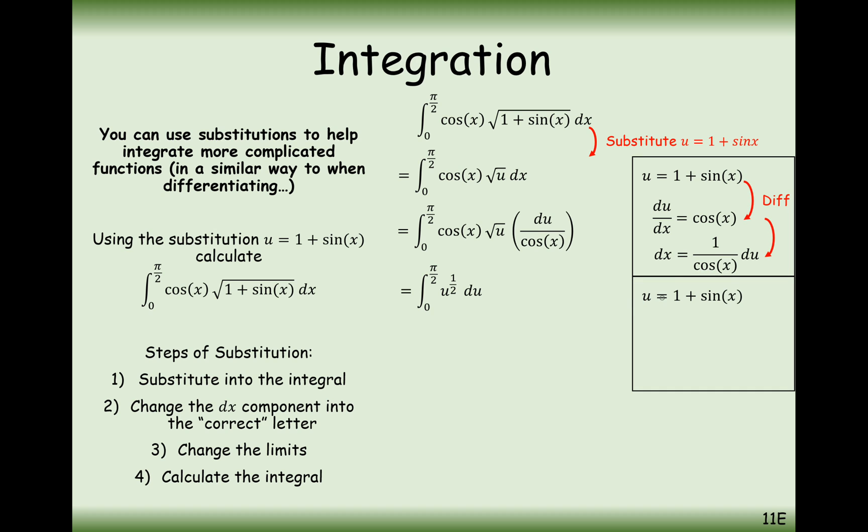u is equal to 1 plus sin x. When x is equal to pi by 2, substitute it into this formula. Sin of pi by 2 is 1, so 1 plus 1 will be 2. So the top boundary is 2.